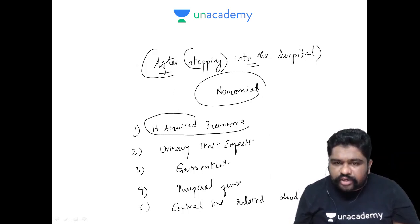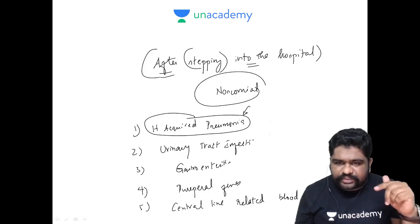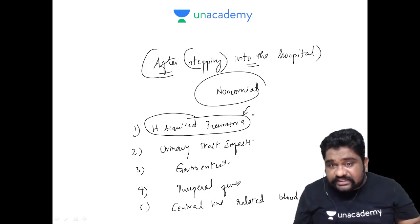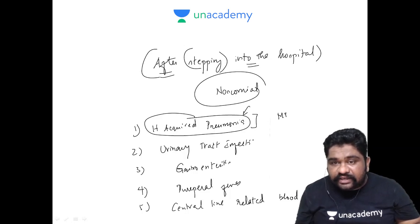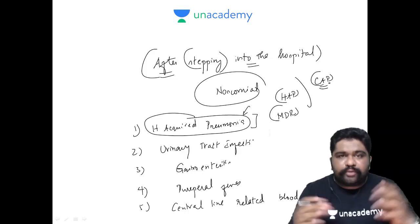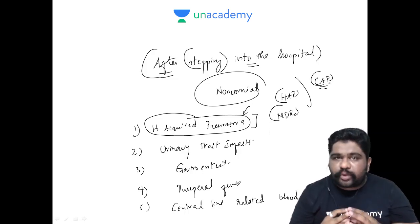If you got pneumonia after coming to the hospital, the most important criteria to understand is these infections are multi-drug resistant. The concept of HAP, Hospital Acquired Pneumonia, is to differentiate that from Community Acquired Pneumonia. If you get the infection from the community where you are living, you call it Community Acquired Pneumonia, which specifies typical infections.